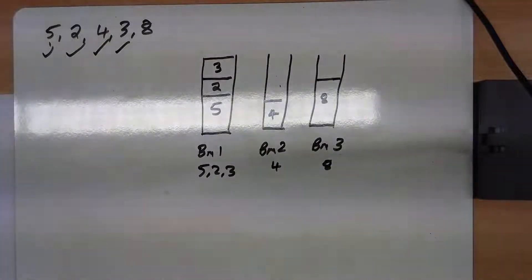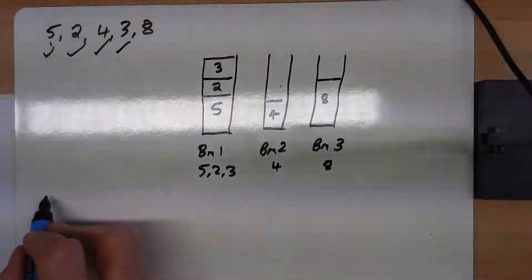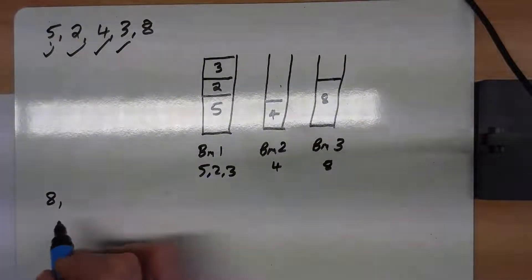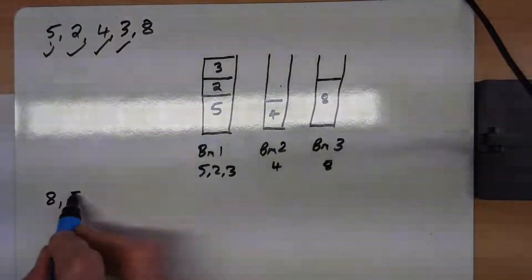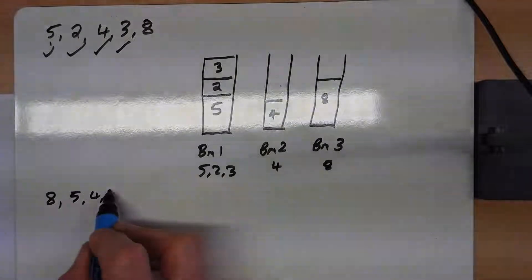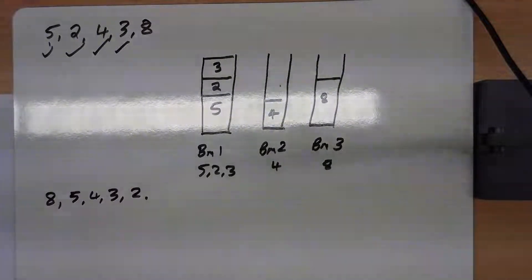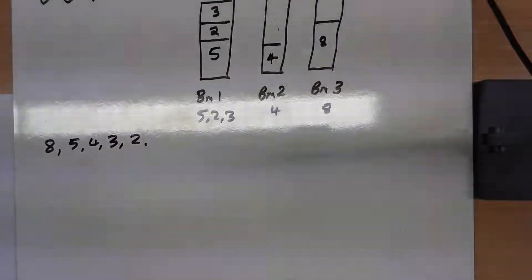But you can do it in a different way. You could rearrange these using what's called first fit decreasing. So we pick up all these boxes and rearrange them: 8 first, then 5, then 4, then 3, then 2. And we'll do the same thing again.